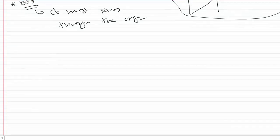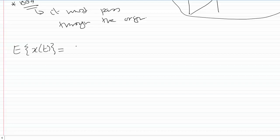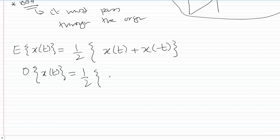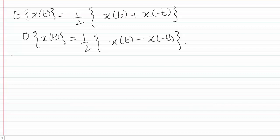There is one more thing: given any signal, we can find its even and odd parts. To find the even part of x(t), we use the expression: even part = (1/2)[x(t) + x(-t)]. To find the odd part of x(t), we use: odd part = (1/2)[x(t) - x(-t)]. Let's do one example where we find the even and odd parts of a signal.